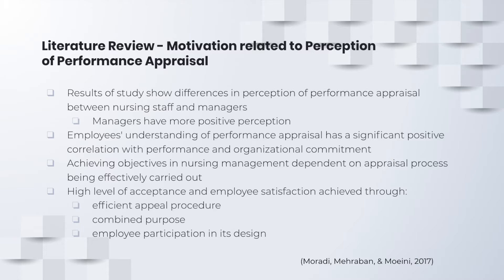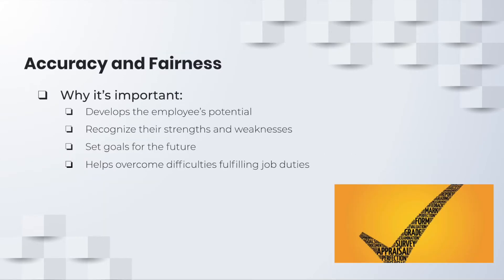The article found a high level of acceptance and employee satisfaction is achieved through three factors: an efficient appeal procedure related to their performance appraisal, a combined purpose of what the appraisal process is assessing, and employee participation within its design. Information obtained during the performance appraisal can be used to develop the employee's potential and recognize their strengths and weaknesses, in addition to setting goals for the future. The manager needs to use strategies that increase the likelihood of a fair and accurate appraisal.